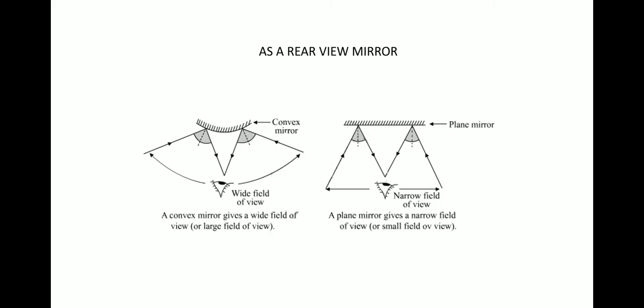So compared to a plane mirror, a convex mirror will have a wider field of view. Here we can see in the image, a convex mirror of the same length compared to a plane mirror has a much larger field of view.